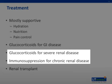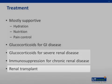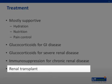Severe and chronic HSP renal disease may require treatment with various immunosuppressants in conjunction with glucocorticoid therapy. Renal transplantation has been successful in some children who develop renal failure.